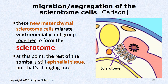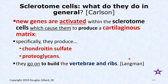Here in the diagram: the notochord and neural tube are in the midline at center. This is the ventral medial region of the somite — it's turned into mesenchymal sclerotome cells. The somitocele is still epithelial at this point. New genes are activated within the sclerotome cells that cause them to produce cartilaginous stuff like chondroitin sulfate proteoglycans — things needed to make bone and disc. They'll go on to build vertebrae, ribs, and discs.